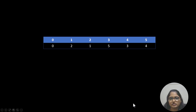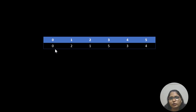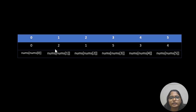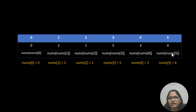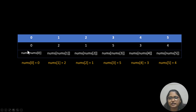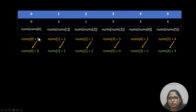Let's take the first example: these are the indexes and these are the values for those indexes. We need to build another array containing the output values. To get there, we need two things: the original array elements nums[0], nums[1], nums[2], nums[3], nums[4], nums[5], and also nums[nums[i]] — so nums[0], nums[2], nums[1], nums[5], nums[3], and so on.